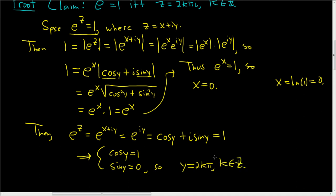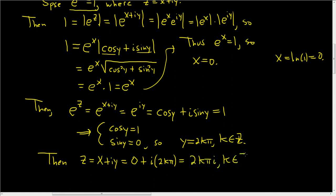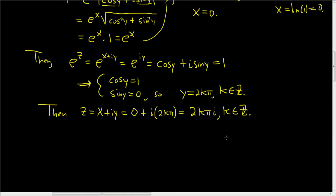So finally, we can write down z. Well, z was x plus i·y. We said x was 0, so this is 0 plus i times 2k pi, which equals 2k pi i, where k is in the integers. So the first half of our lemma is done. Now to show the other direction — this part should be pretty quick. We suppose that z is equal to 2k pi i for some k in the integers, and we have to show that e to the z is equal to 1.